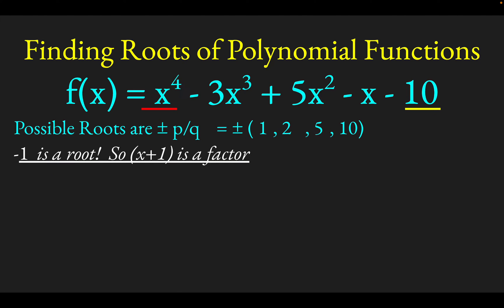If negative 1 is a root, that means x plus 1 is a factor. So what that means is if we can factor out x plus 1, we'll knock this down to a cubic polynomial, which is easier to solve. I'm going to do synthetic division to divide x plus 1 into this big fourth order polynomial. As you may remember with synthetic division, you put the root, so if you're dividing x plus 1 into this thing, you put negative 1 up in this little box and simply write down the coefficients: 1, negative 3, 5, negative 1, and negative 10. Draw your little line.